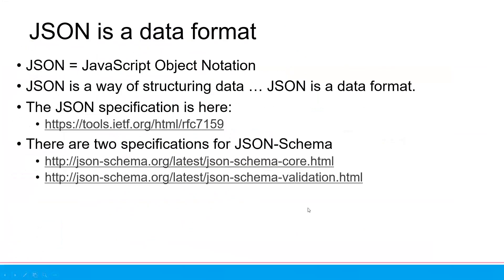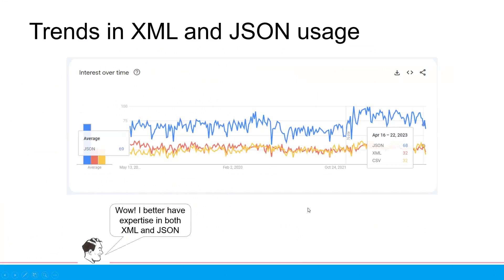What about CSV? Somehow CSV is still used. But if you look at the graph, the blue color is JSON. People are using JSON more than XML and CSV.